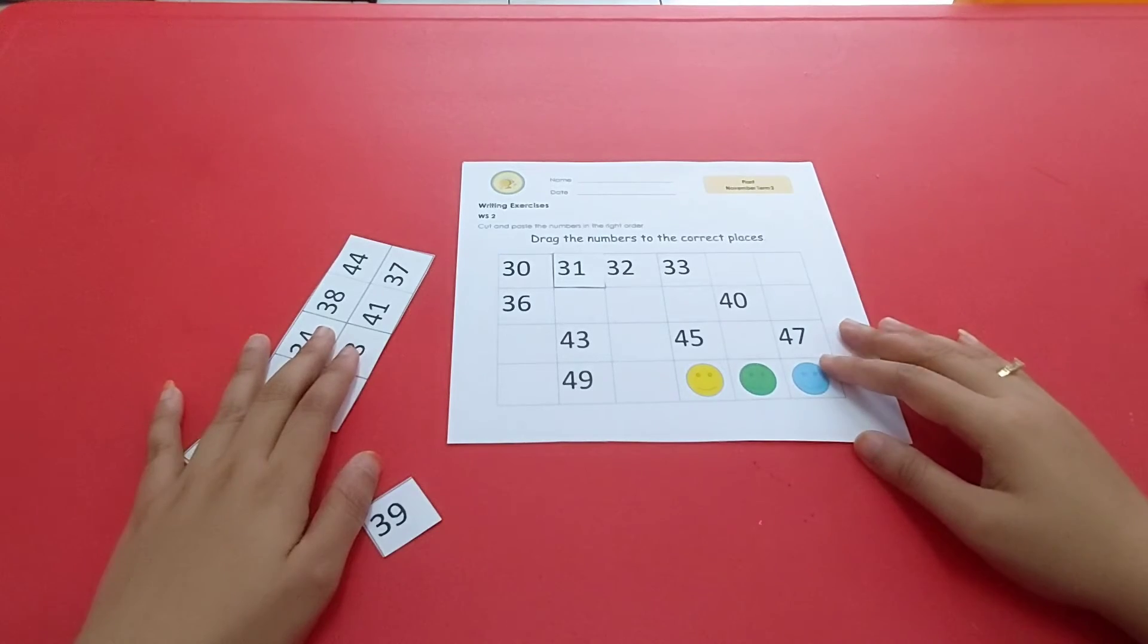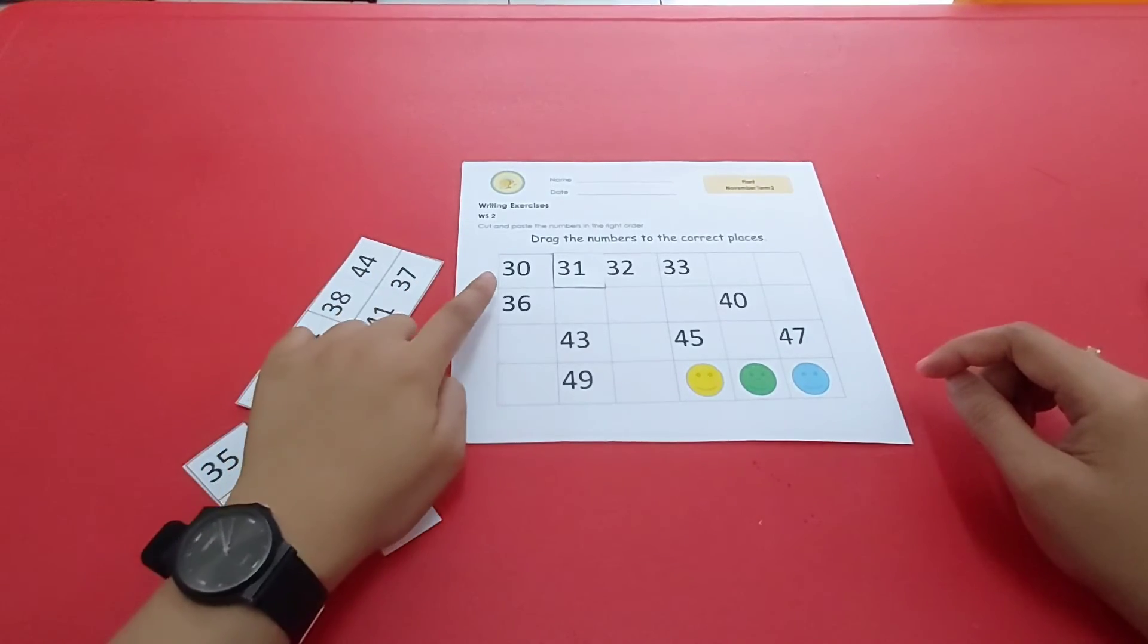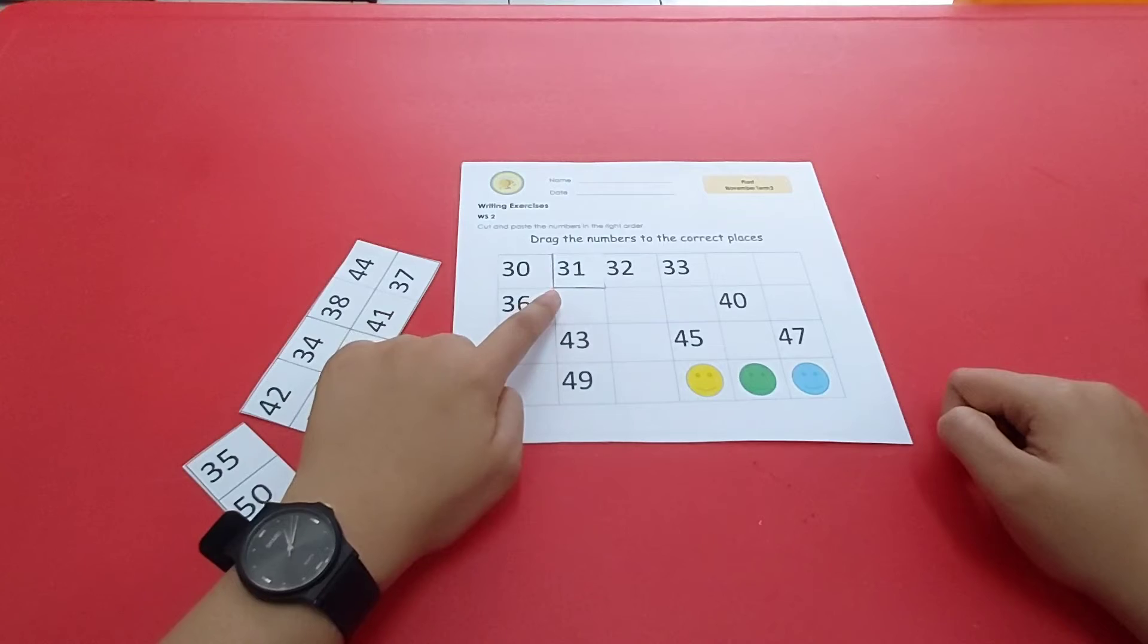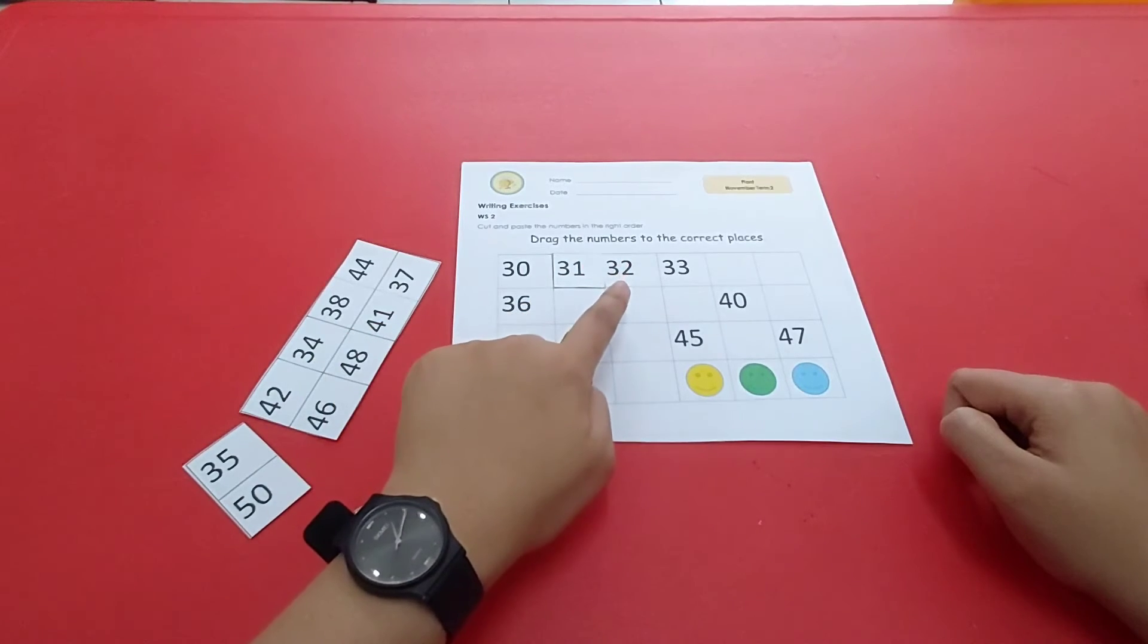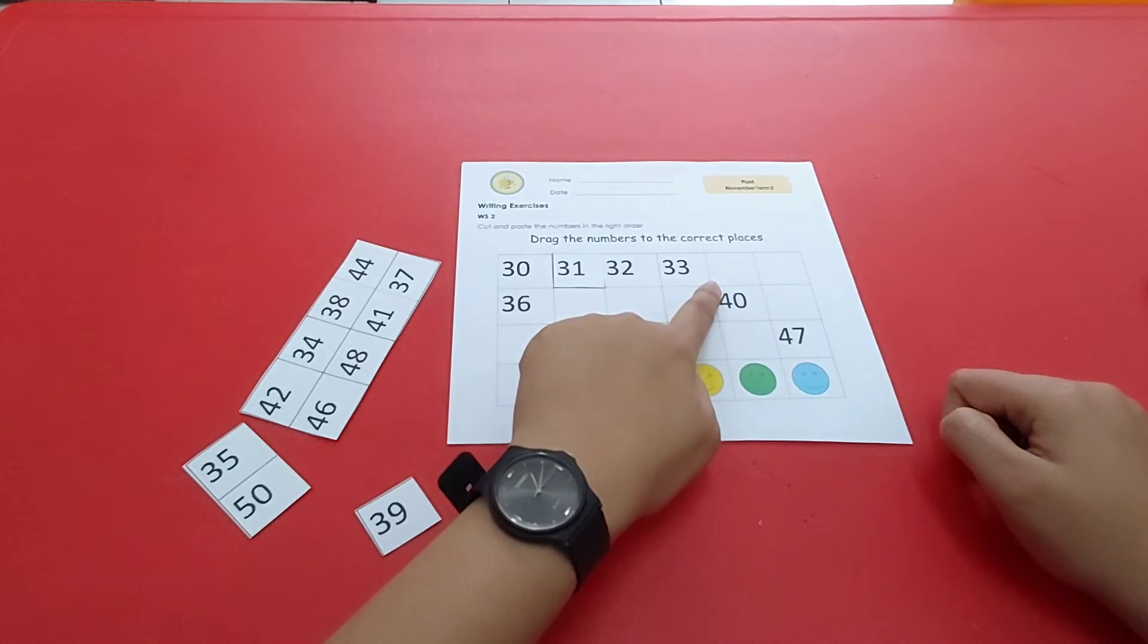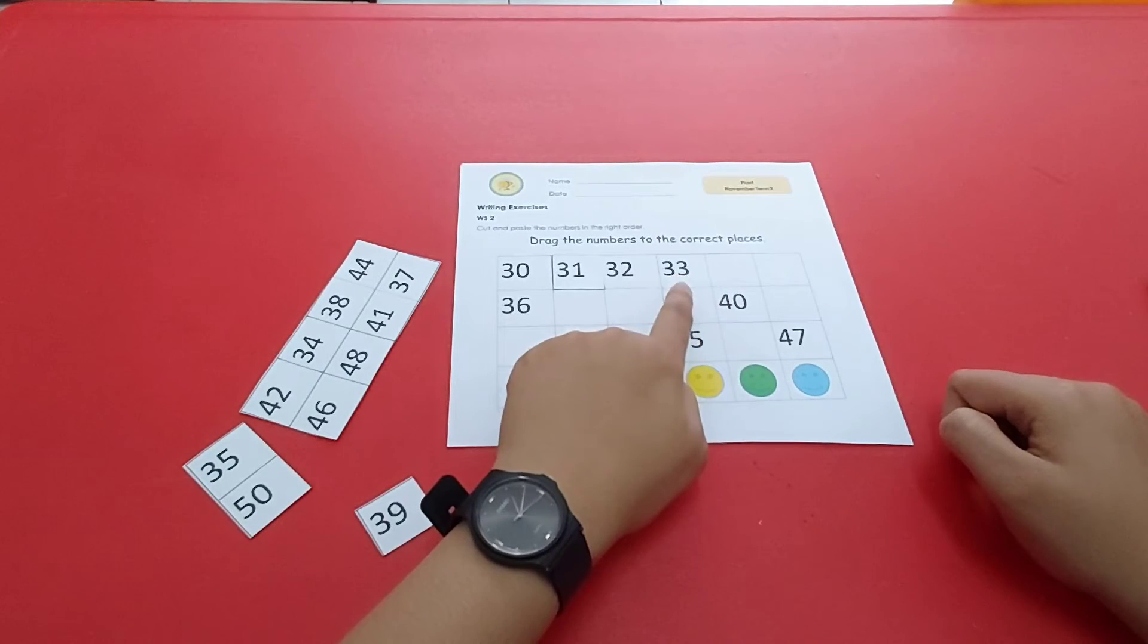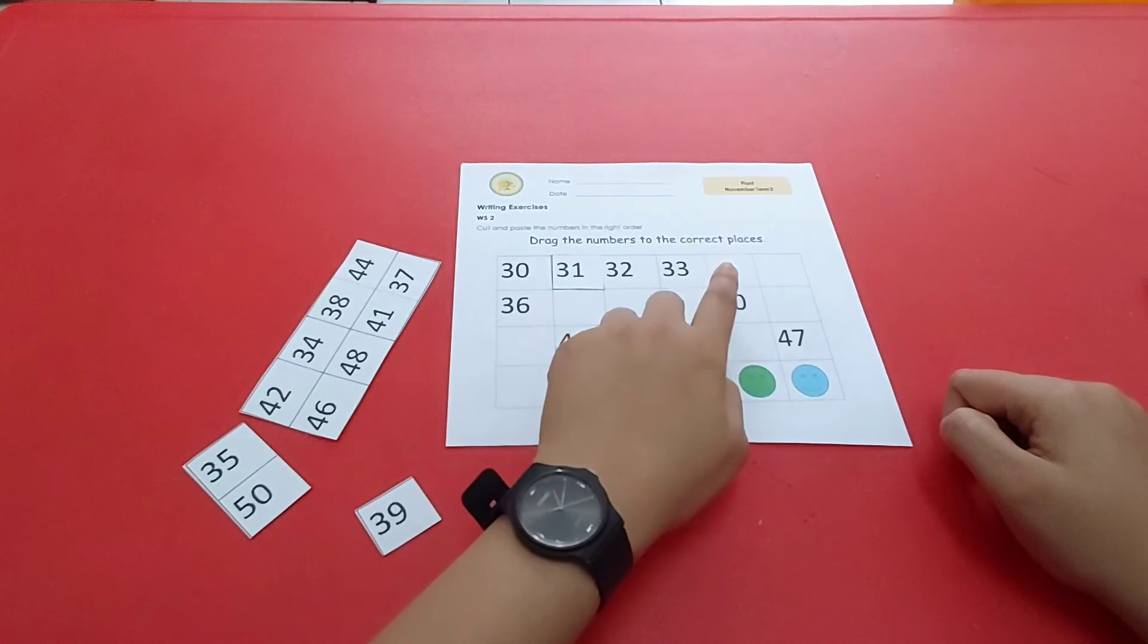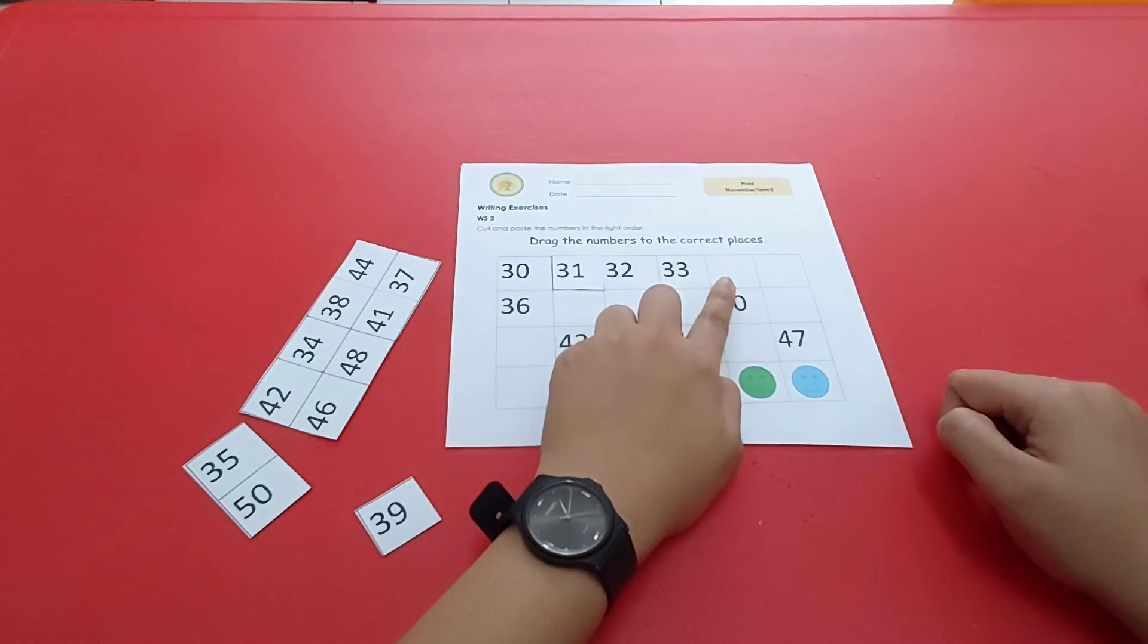Like that. Now, this is 30, 31, 32, 33, and there's a blank. What number comes after number 33? You were correct. After number 33, there's number 34.